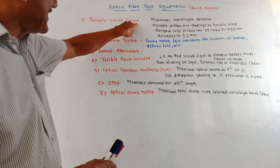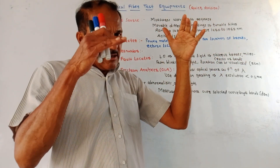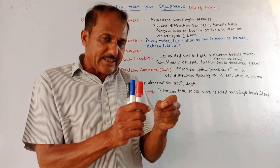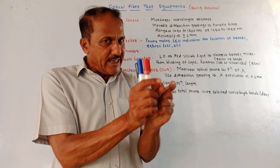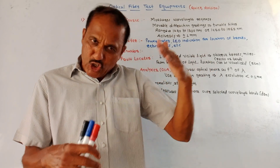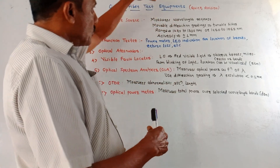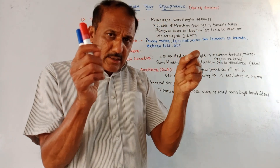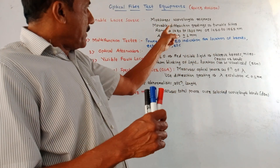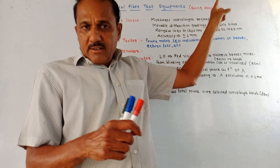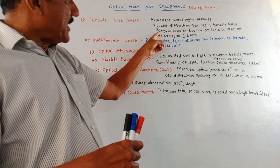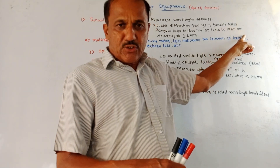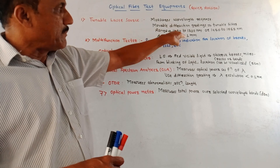First is tunable laser source. A semiconductor type of laser source is used and it is used to measure the wavelength at a selected point. We select a particular wavelength point and measure the wavelength of that laser beam — it measures the wavelength response of the optical fiber. To select a particular wavelength point, it makes use of movable diffraction gratings, which acts as a tunable filter. The range is 1280 to 1330 nanometers or 1450 to 1565 nanometers. Accuracy is plus/minus 1 millimeter.